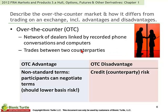One of our big distinctions in the John Hull introduction is over-the-counter as opposed to exchange-traded. Over-the-counter refers to a network of dealers linked by phone or computers, with a trade between two counterparties. The advantage — and in many cases the necessity — of over-the-counter is that the two counterparties can customize the terms, features, or specifications of the contract. The big disadvantage is that lacking a central exchange or central counterparty, each counterparty has counterparty risk to the other.